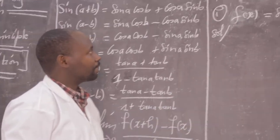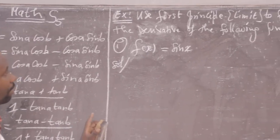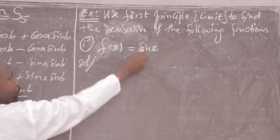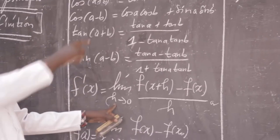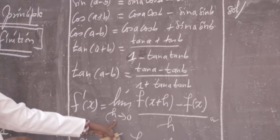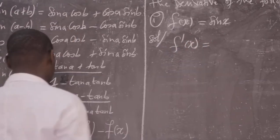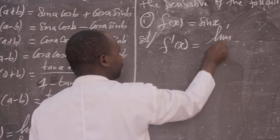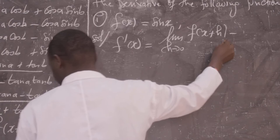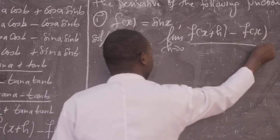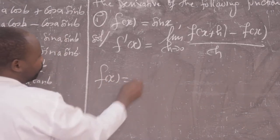Now let us do our first example: use the first principle or limit definition to find the derivative of the following function f(x) = sin(x). We have to choose the formula for performing such a question. The derivative f'(x) is equal to the limit as h tends to 0 of f(x+h) minus f(x) over h.